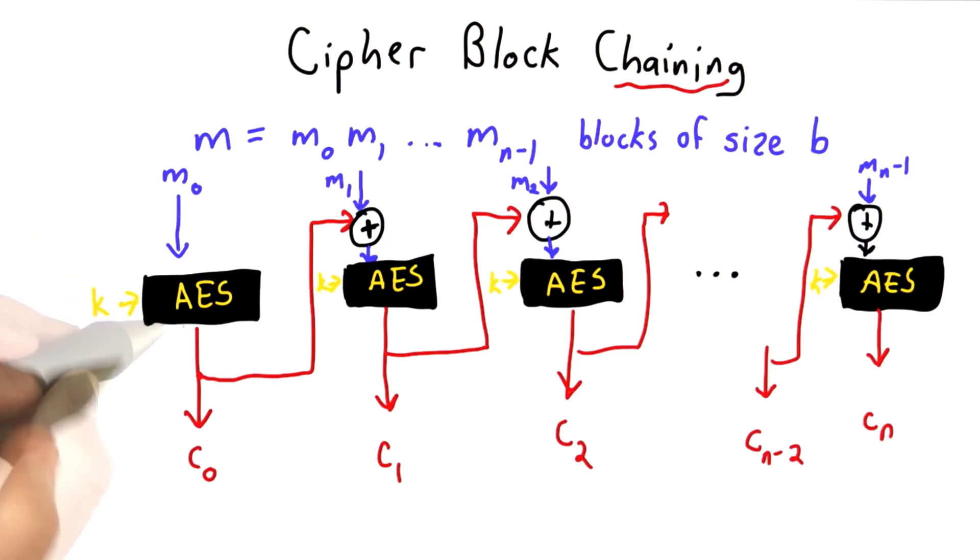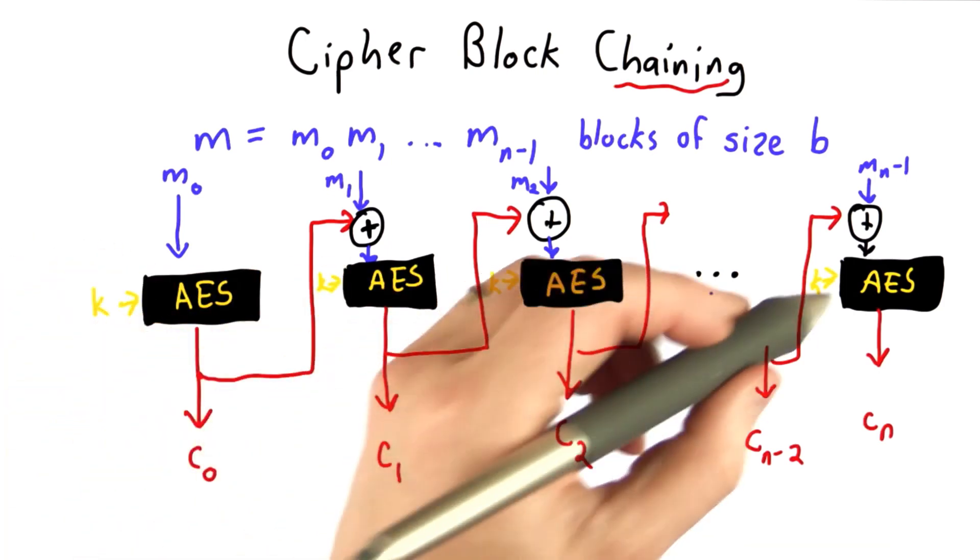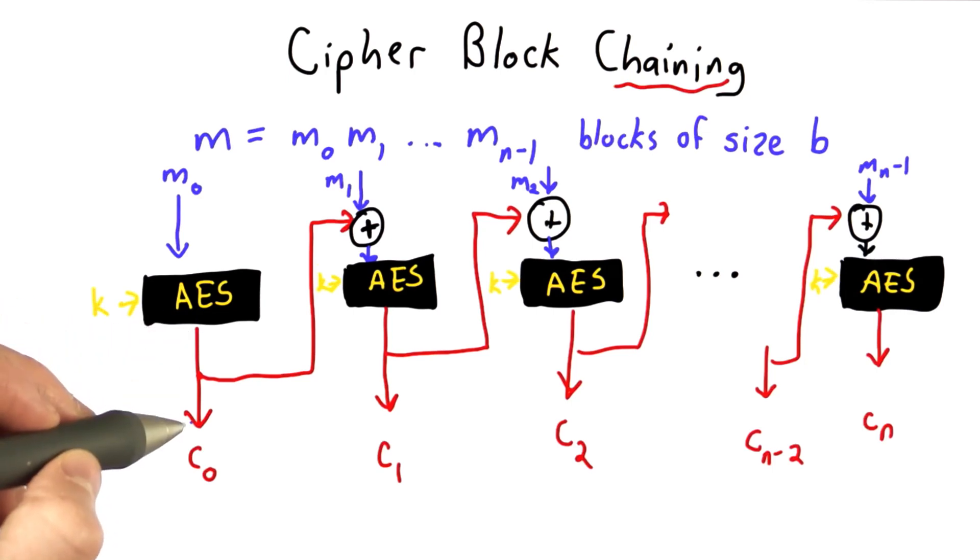Let's assume it's still AES, using the same key. So we're using the same key for each block. We're going to get as output a cipher text.